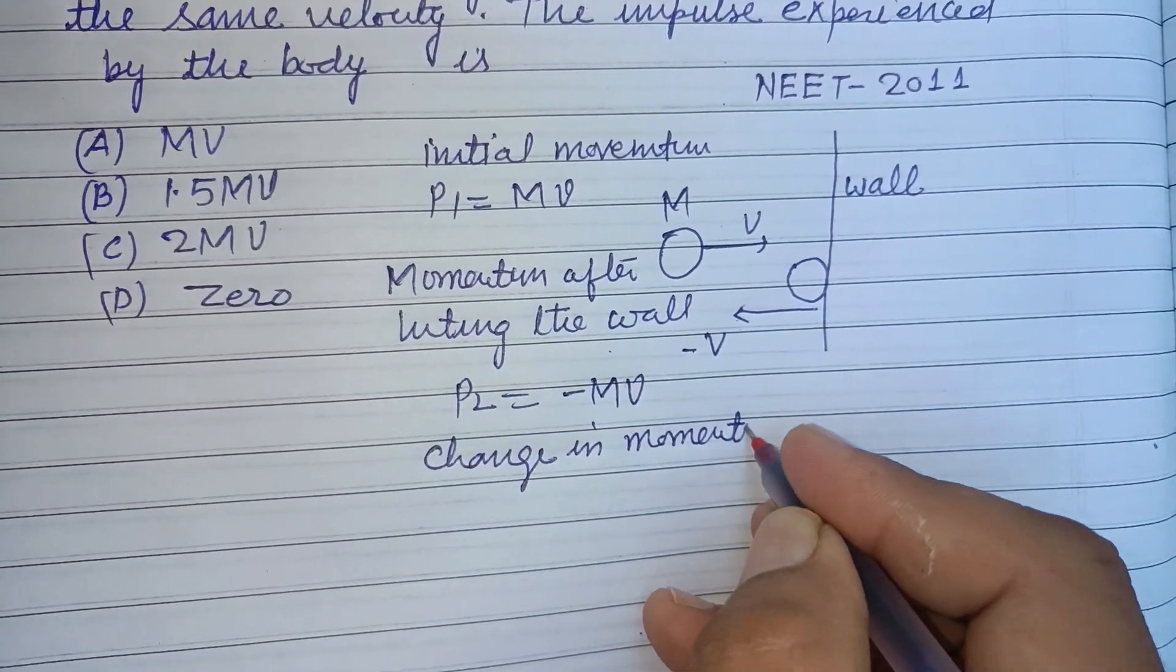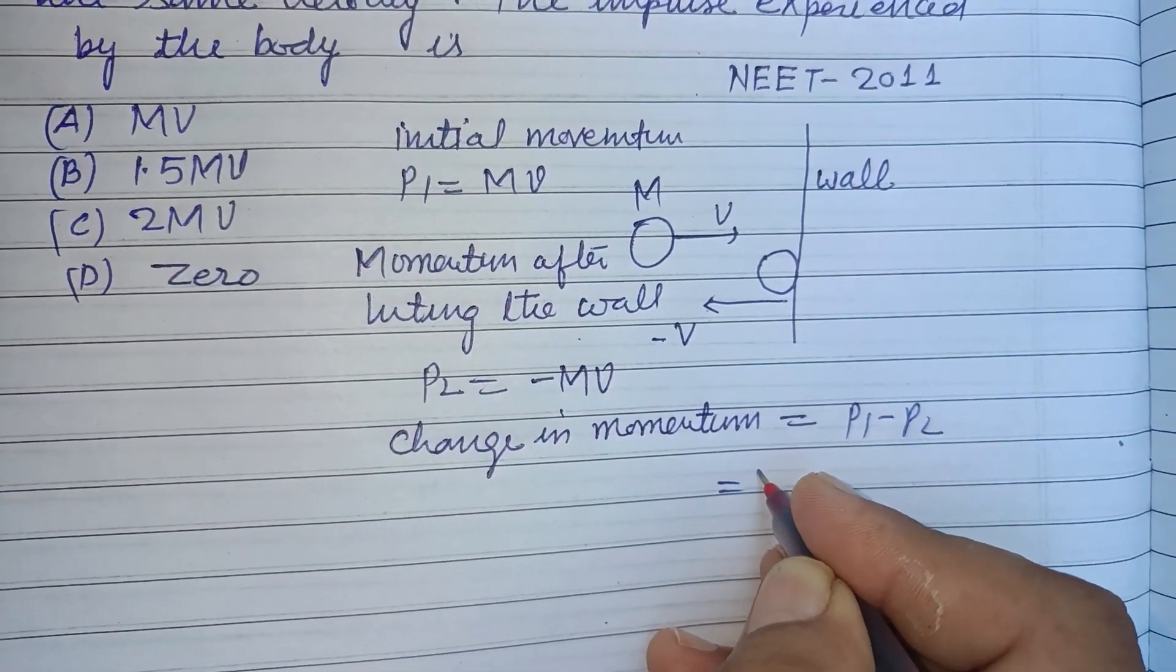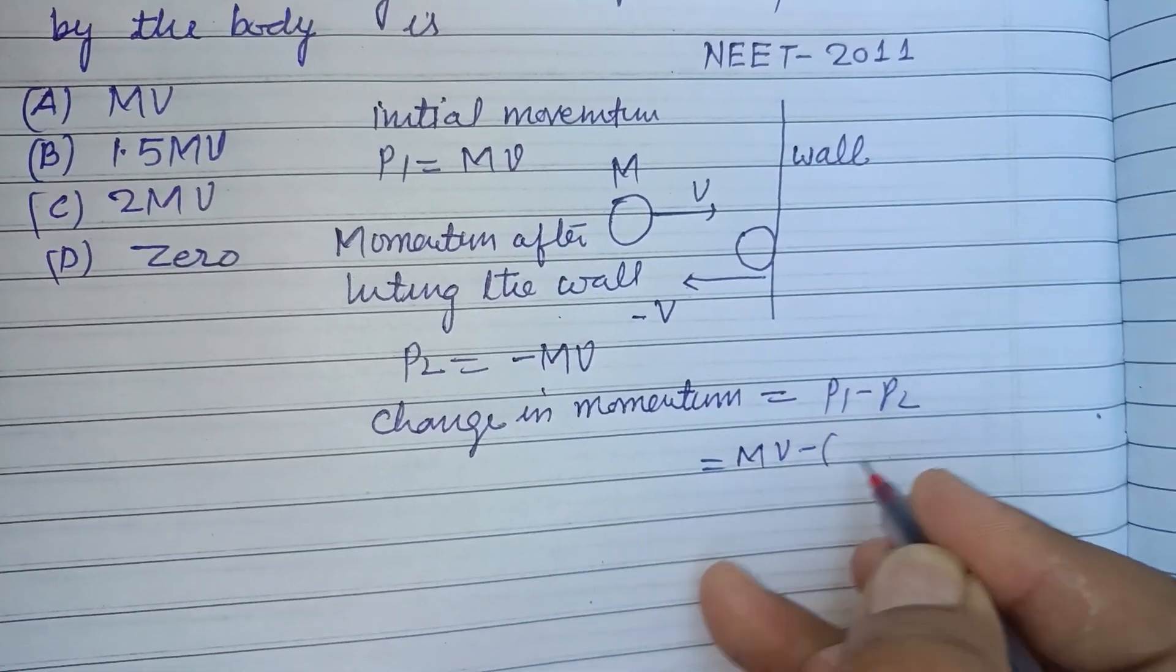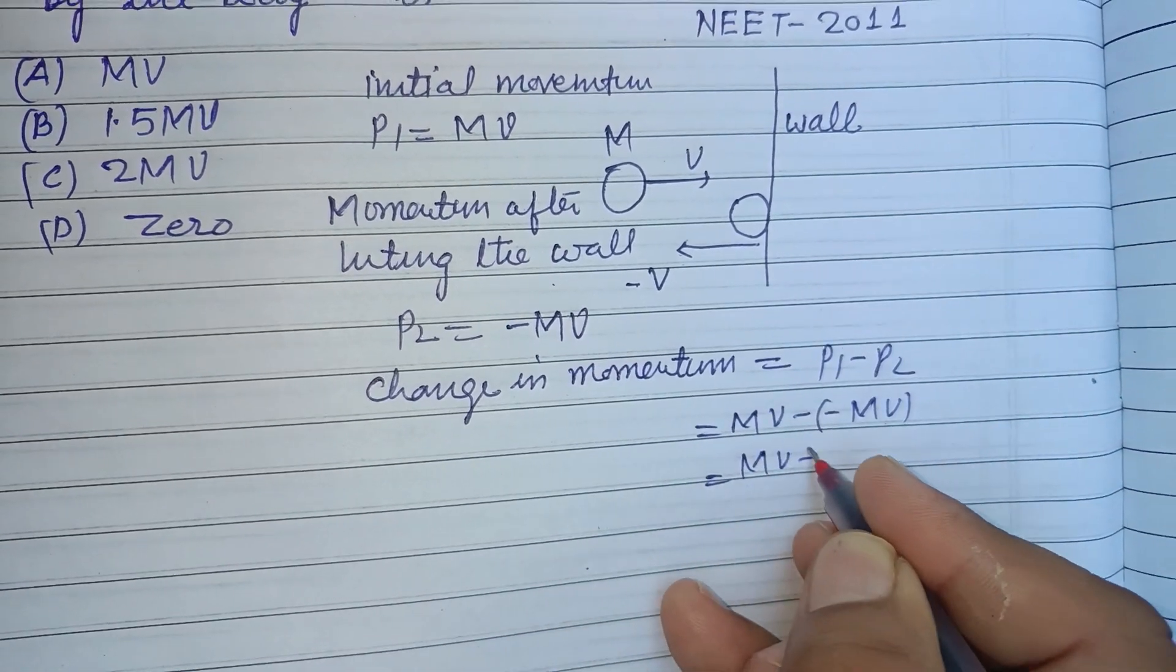Change in momentum equals P1 minus P2, that is MV minus minus MV, so this is MV plus MV...